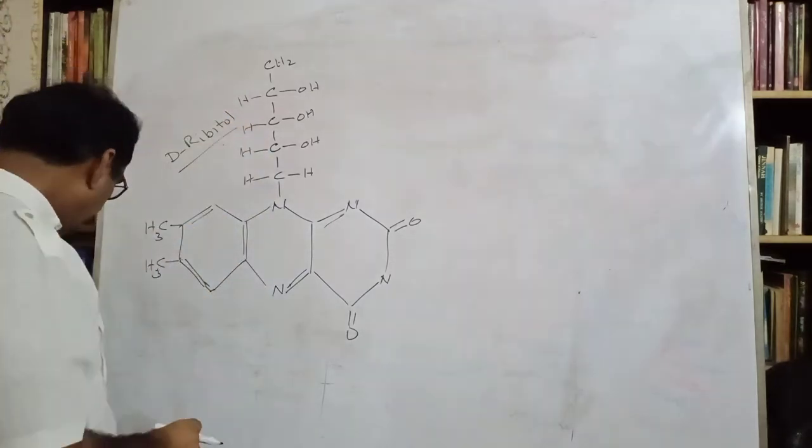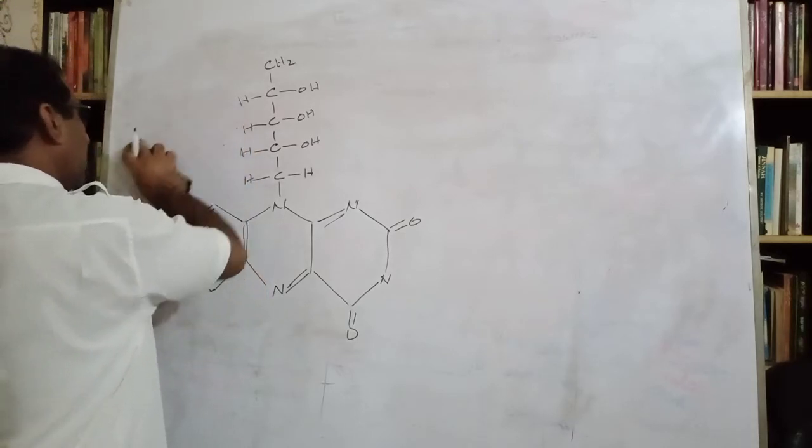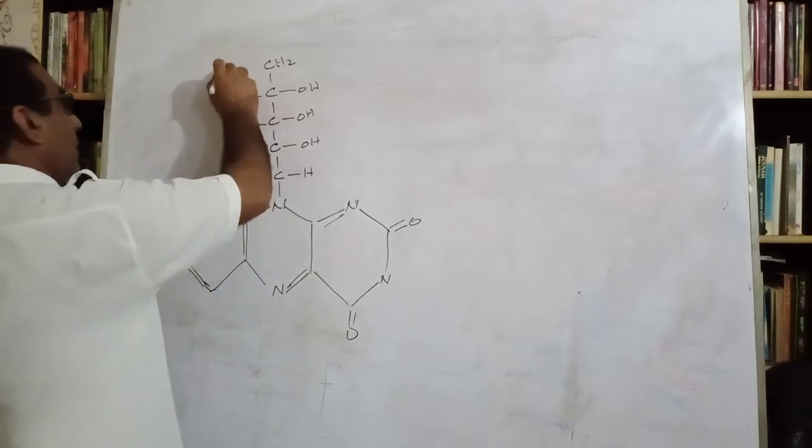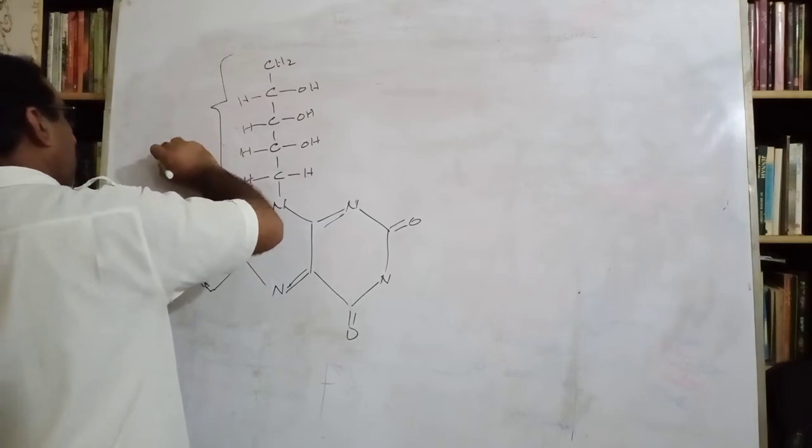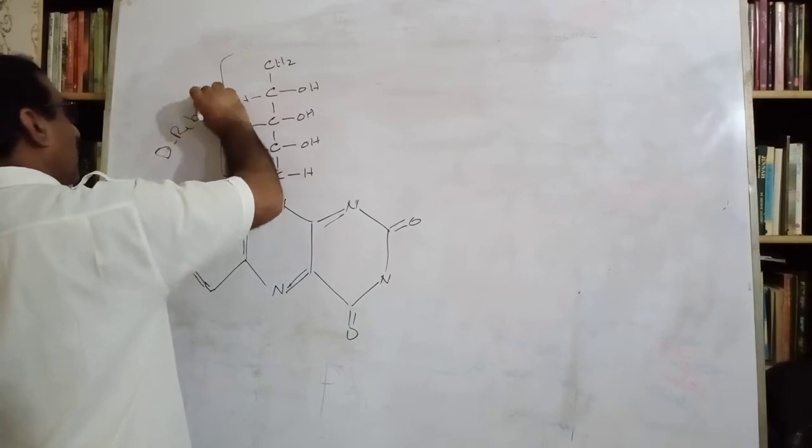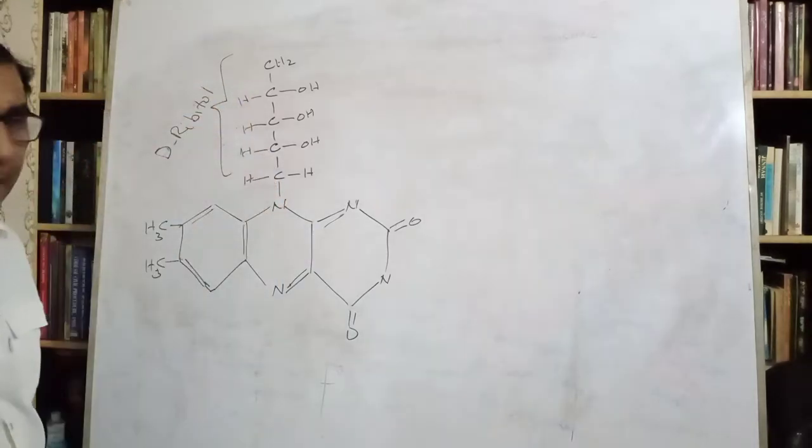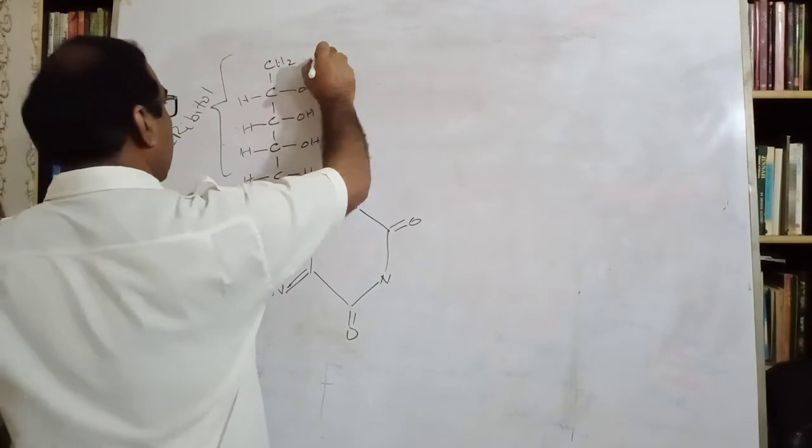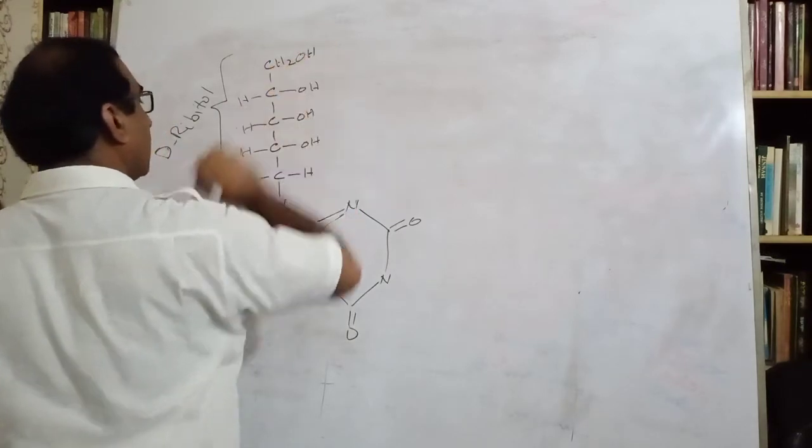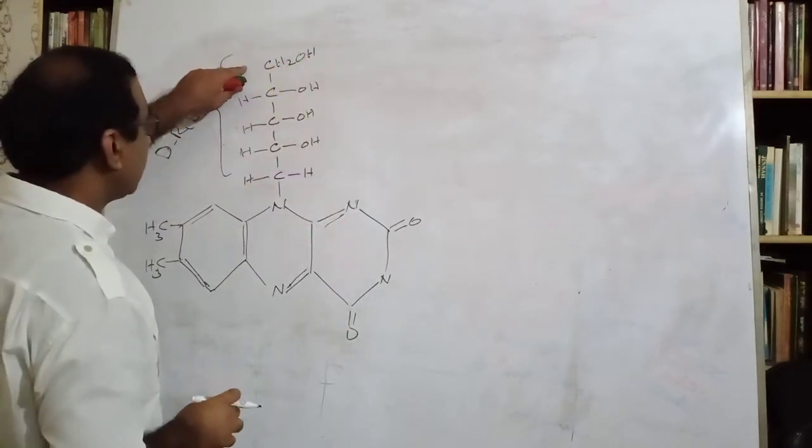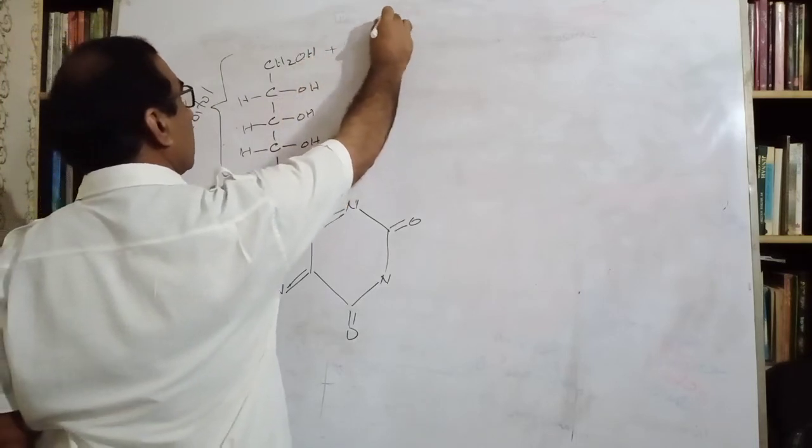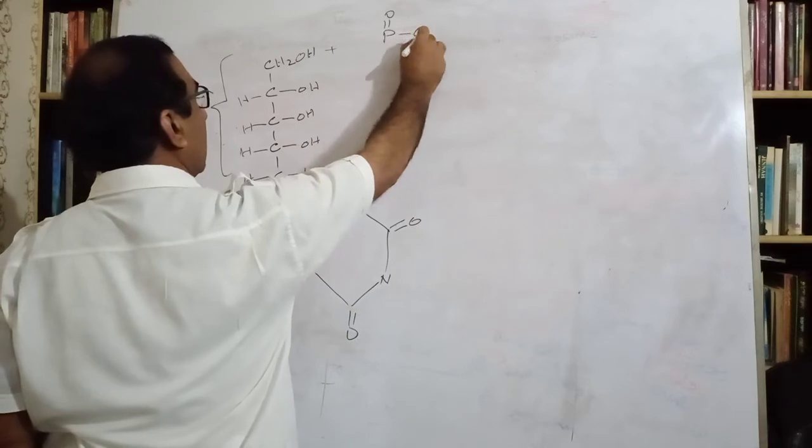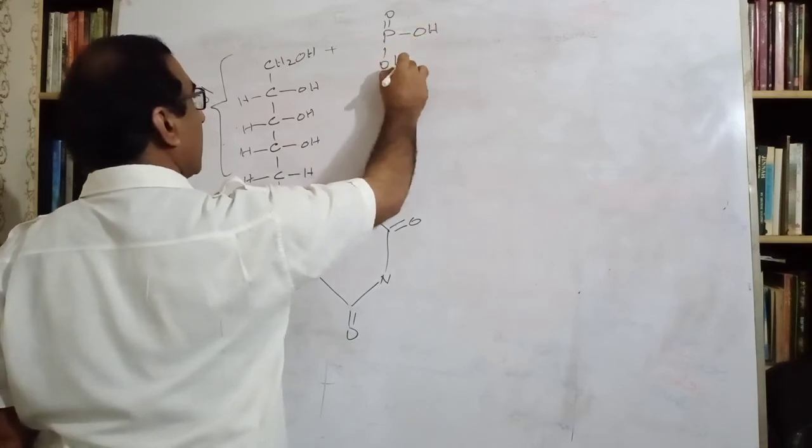This is D-ribitol. Here is D-ribitol. And this D-ribitol reacts with phosphate and it becomes what?